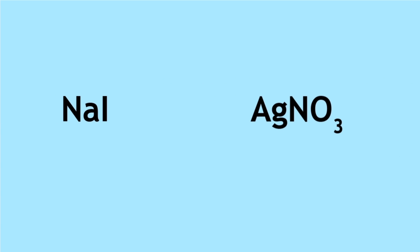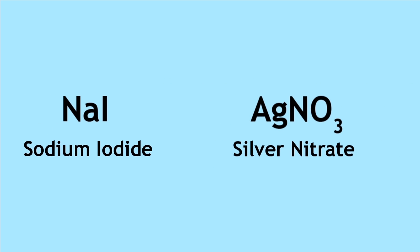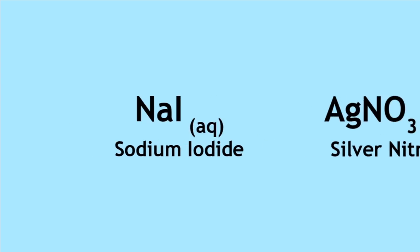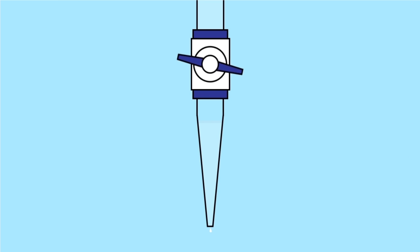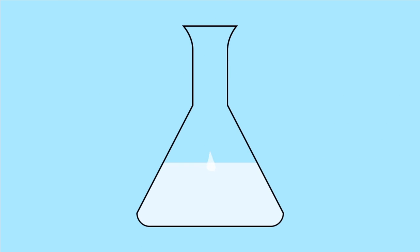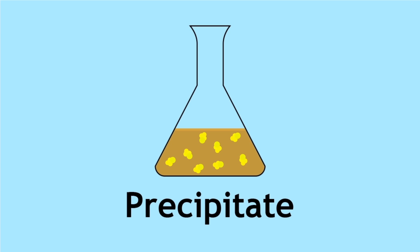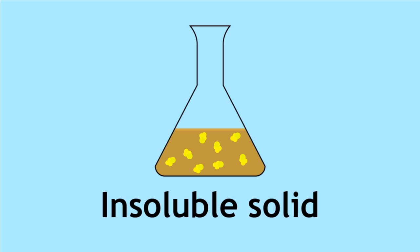Let's say you have been given two solutions: sodium iodide and silver nitrate. These two salts are soluble in water, so aqueous solutions are formed. Add silver nitrate dropwise to sodium iodide, and you will notice that a bright yellow solid is formed. This bright yellow solid is known as a precipitate, which is an insoluble solid formed from combining two solutions.